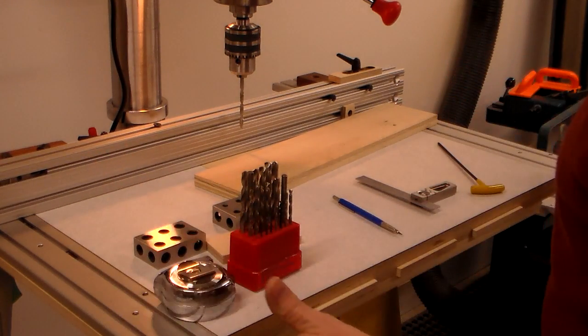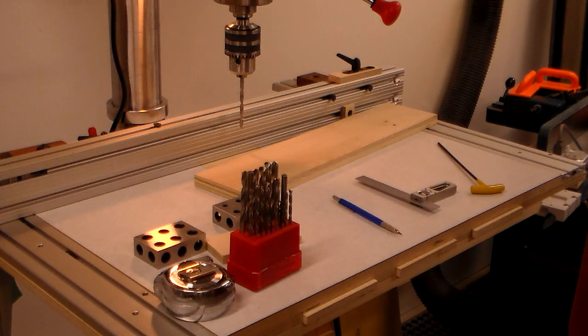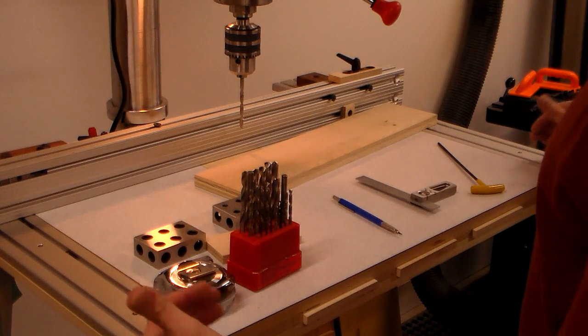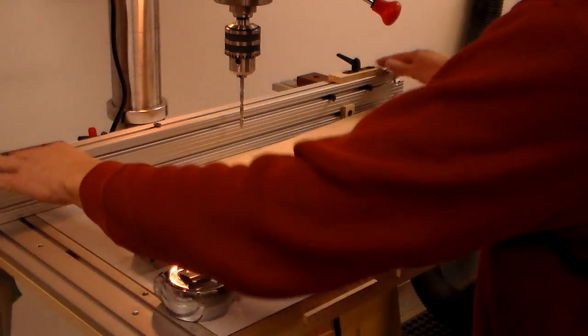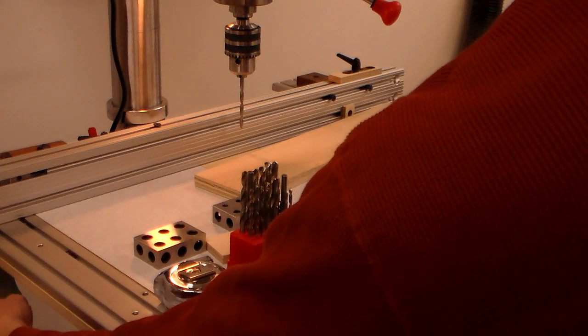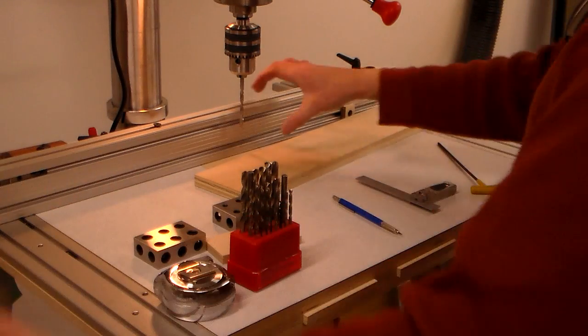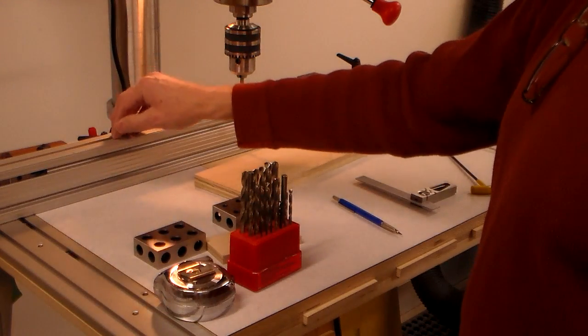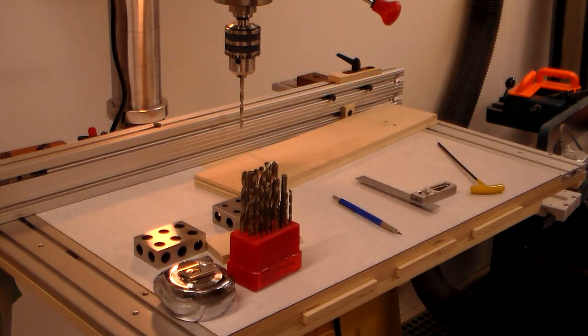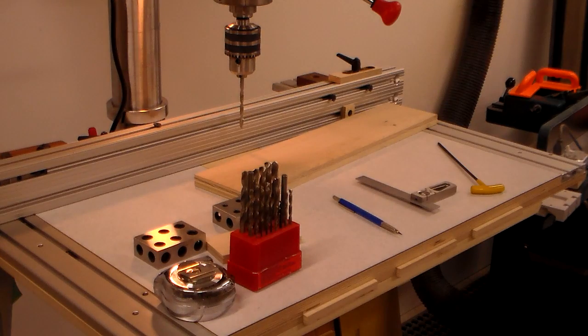They can slide this way to give me more capacity towards me, and then the fence extrusion itself is held in place with these Festool quick clamps. So I have infinite adjustability that way, and your only limitation really for a fence is your shop and the length of the extrusion you want to put on it.